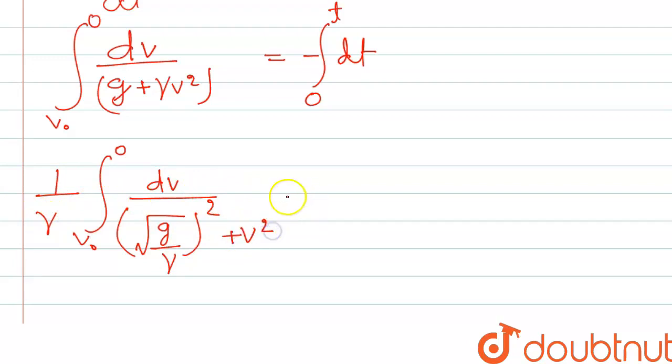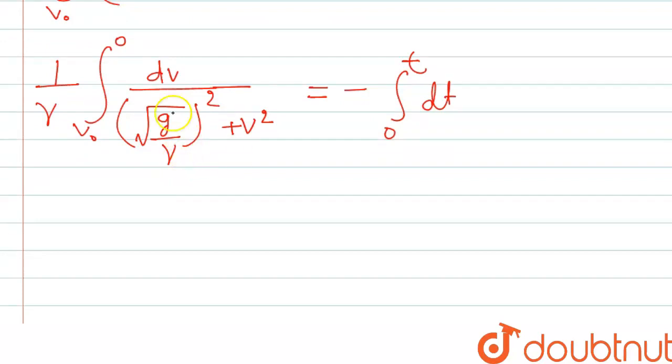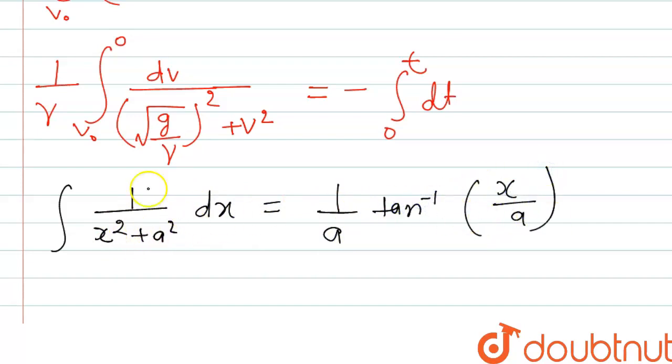Plus v square, this will be equal to minus zero to t dt. Now if you remember this standard form, then we remember that one by x square plus a square dx is equal to one by a, tan inverse x by a. And if we relate here, this is the a and this is the x here.